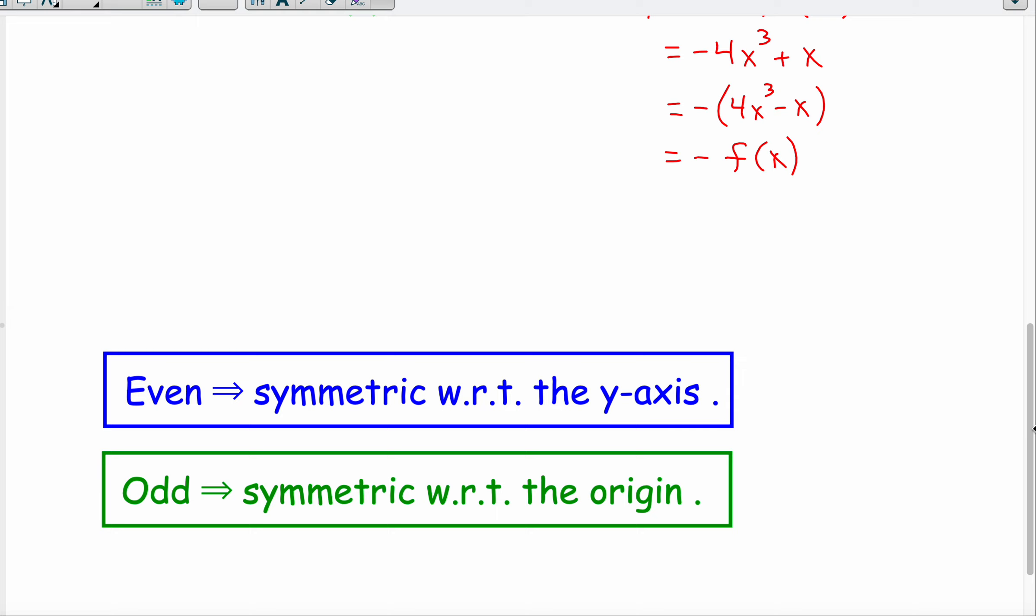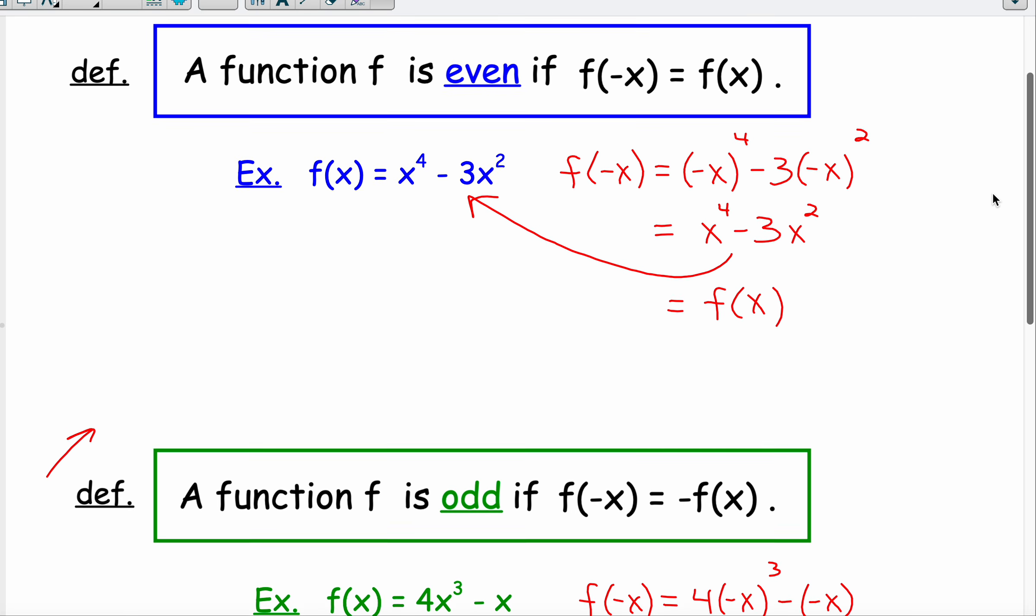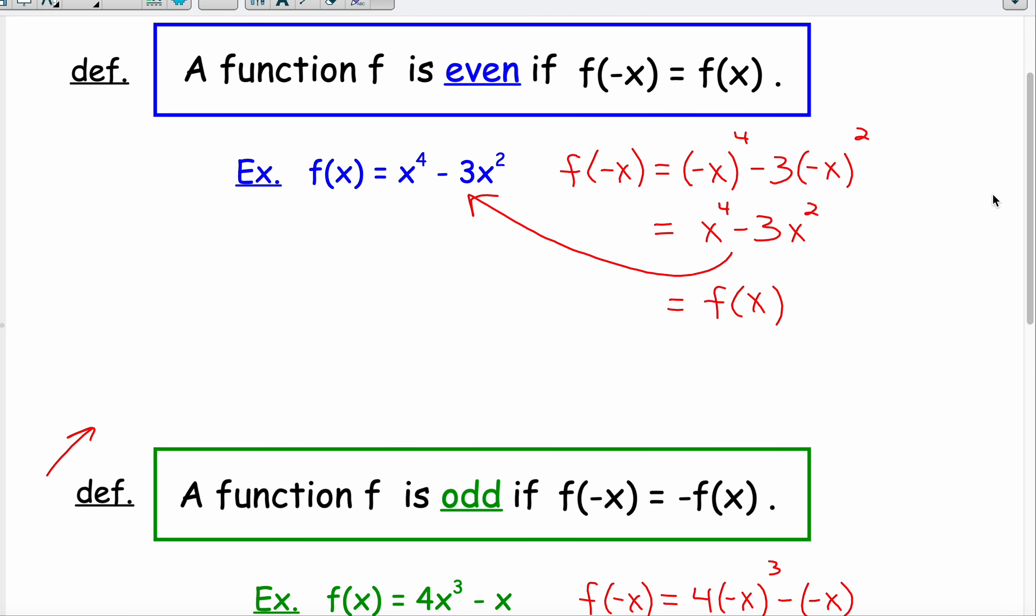So if you're just looking at graphs, then you can think of the visual symmetry here, symmetric about the y-axis, symmetric about the origin. But if you're just dealing with equations, then you can evaluate them like we did in these two examples.